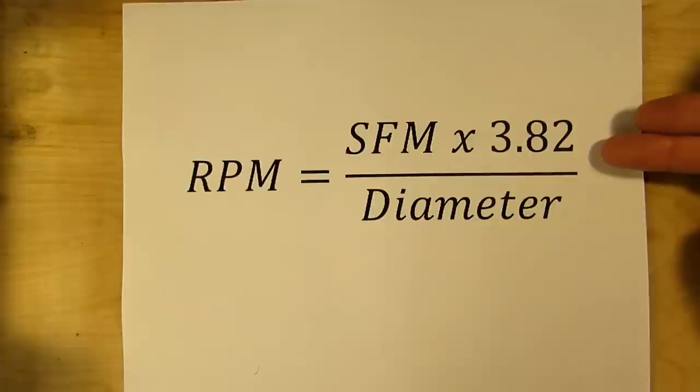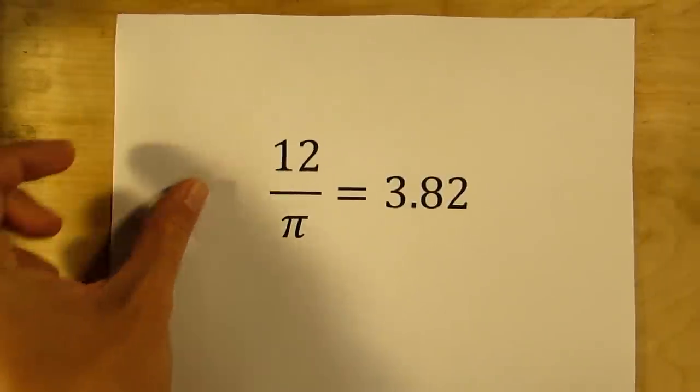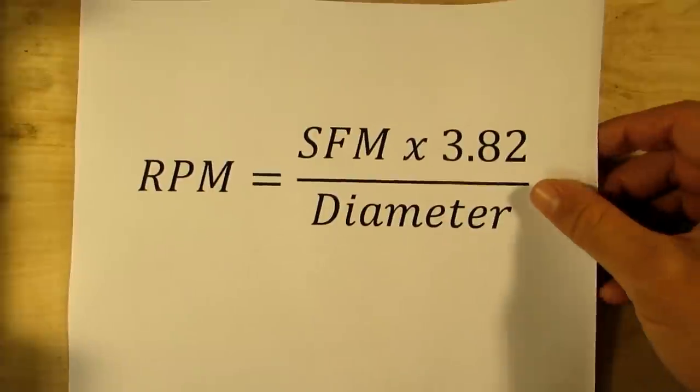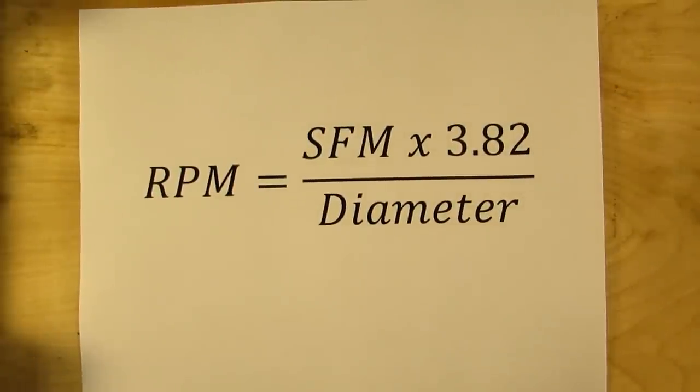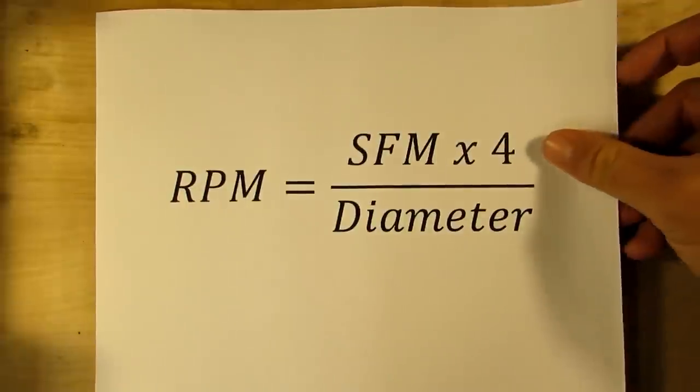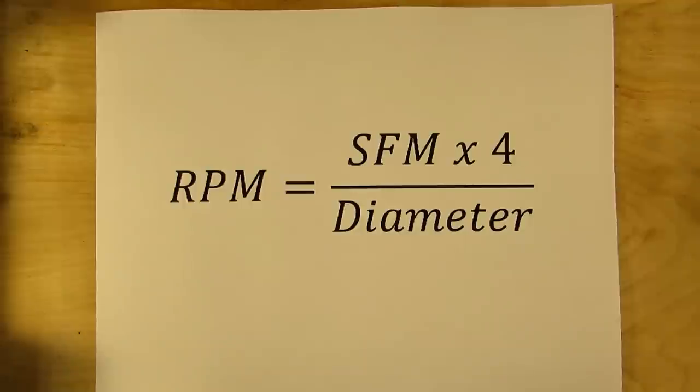So where does 3.82 come from? Well, 3.82 is actually 12 divided by pi, so what we're doing is converting our surface feet into surface inches because the diameter that we're going to be dividing by is in inches. Now if you're going to be programming a CNC machine, you use this formula because you can specify the exact rpm of the spindle in the program. However, if you're working with manual machines you can simplify your math and just make it SFM times 4 divided by diameter. The 4 is an approximation of 3.82, and in the case of manual machines you're very rarely ever going to be able to choose the calculated rpm. You're always going to end up choosing one that's close to it but it's not going to be exactly right, so 4 actually gets us in the ballpark and it's a whole lot easier to remember.